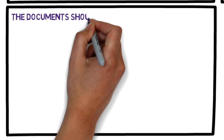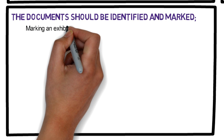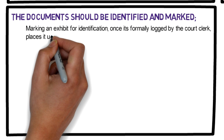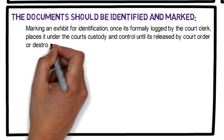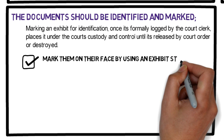The third requisite: the documents should be identified and marked. The first step when you want to offer something into evidence at trial is to have it marked for purposes of identification. Marking an exhibit for identification, once it is formally logged by the court clerk, places it under the court's custody and control until it is released by court order or destroyed. Mark them on their face by using an exhibit stamp, a gummed label, or a written notation.